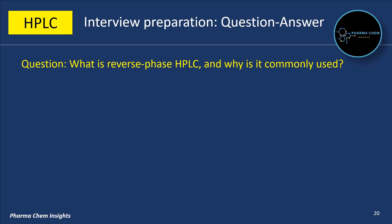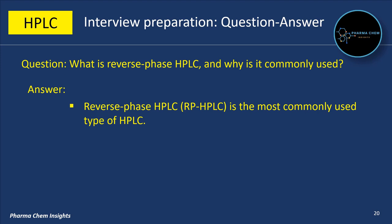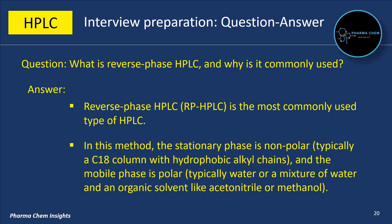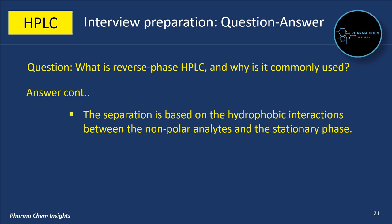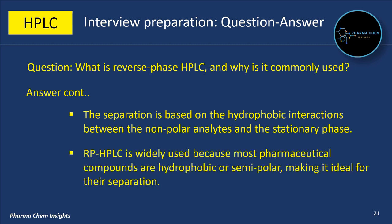Next question: what is reverse phase HPLC and why is it commonly used? Reverse phase HPLC is the most commonly used type of HPLC. In this method, the stationary phase is non-polar — typically a C18 column with hydrophobic alkyl chains — and the mobile phase is polar, typically water or a mixture of water and an organic solvent like acetonitrile or methanol. The separation is based on hydrophobic interaction between non-polar analytes and the stationary phase. Reverse phase HPLC is widely used because most pharmaceutical compounds are hydrophobic or semi-polar, making it ideal for their separation.